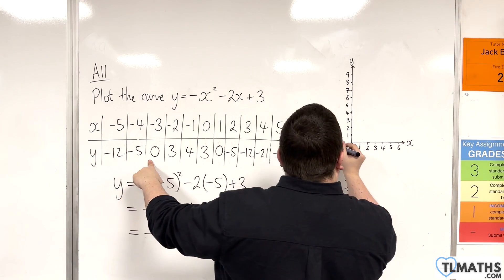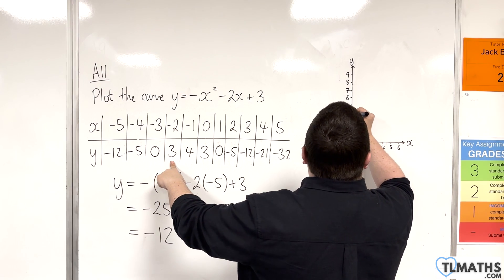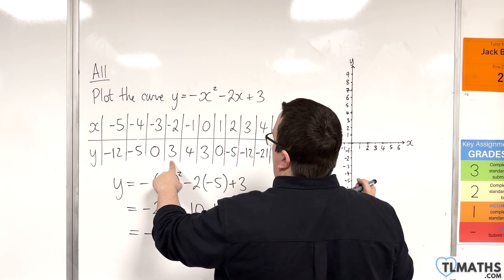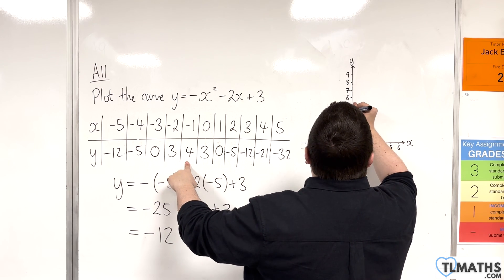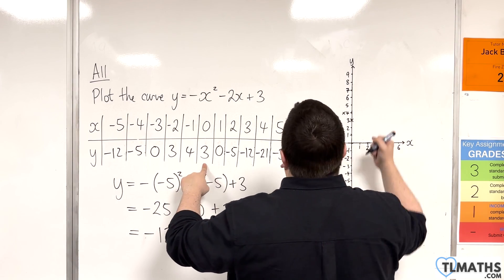Minus 3, 0. Minus 2, 3, about there. Minus 1, 4, there. 0, 3, there.